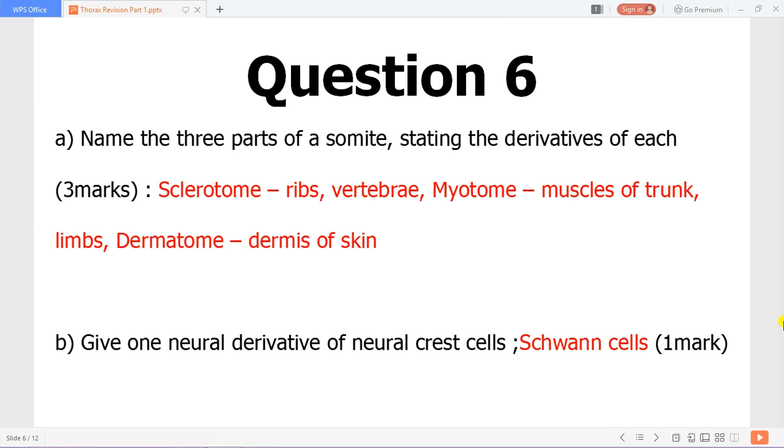Three parts of a somite stating the derivatives of each. The sclerotome gives you the ribs and the vertebra. The myotome gives you muscles of the trunk and limbs. The dermatome gives you the dermis of skin. Remember the myotome usually divides further. A neuroderivative of neural crests is the Schwann cells.